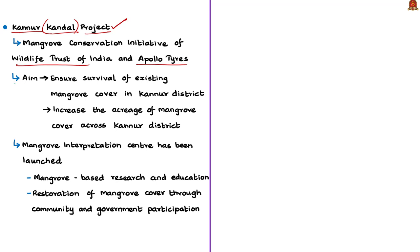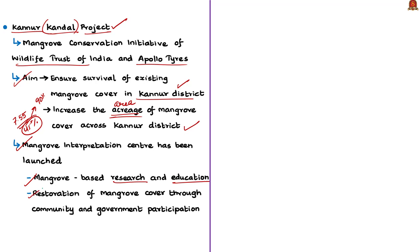One initiative mentioned in the news article is the Kannur Kandal project — 'Kandal' in Malayalam means mangroves. It is a mangrove conservation initiative of the Wildlife Trust of India and a private industry, Apollo Tyres. The project aims to ensure the survival of existing mangrove cover and increase the area of mangrove cover across Kannur district. Kannur has 7.55 square kilometers of mangroves, which is around 45 percent of Kerala's total mangrove forest cover, but nearly 90 percent of these forests are under private ownership and are therefore highly threatened. A mangrove interpretation center has been launched under this project to focus on research, education and restoration of mangrove cover through community and government participation.